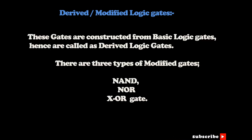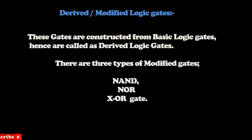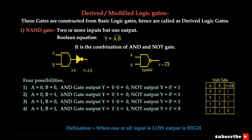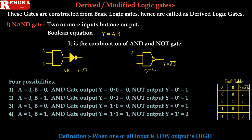Now after the basic gates, there are some gates which are modified or constructed using the basic gates. These are called derived gates or modified gates. There are three types: NAND gate, NOR gate, and XOR gate. The NAND gate is constructed using an AND gate and a NOT gate.